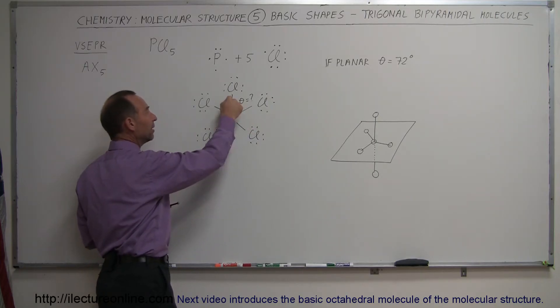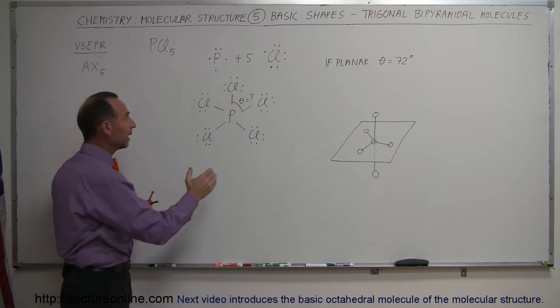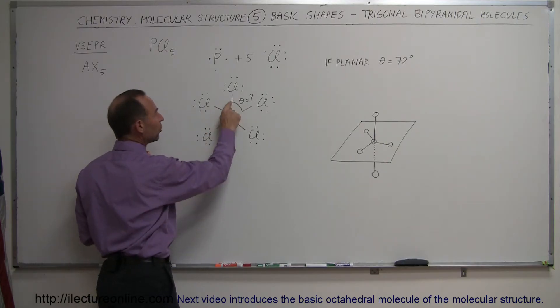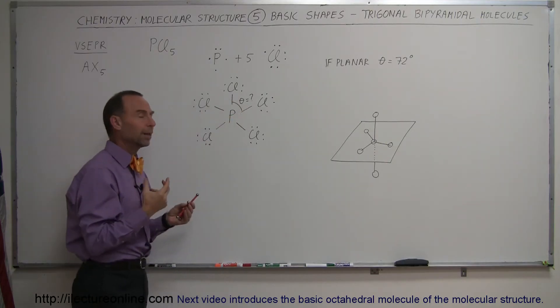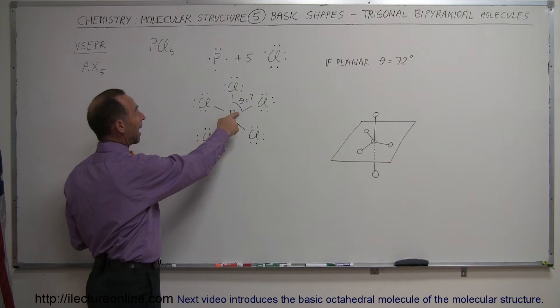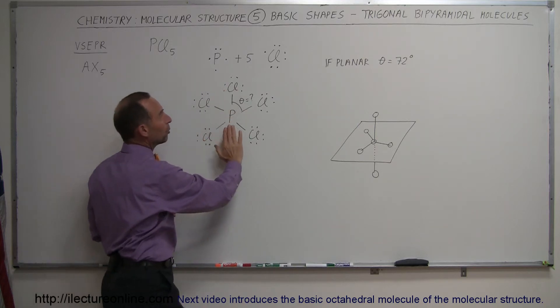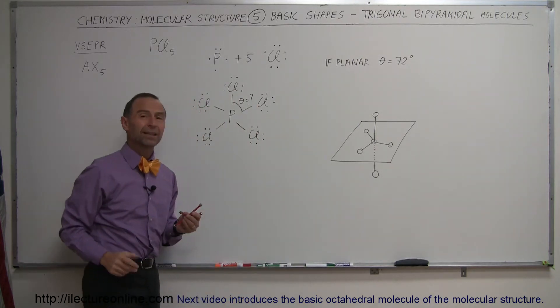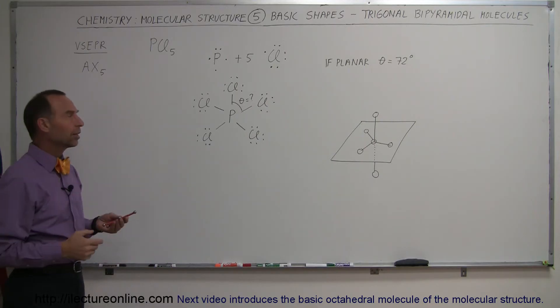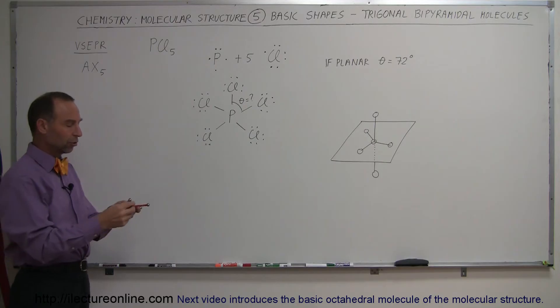Because remember these electrons that are bonding, they will repel each other, and they of course want the largest possible angle. The largest angle you could have when it's a planar molecule would be 72 degrees. That's not very much, so there's actually a different arrangement that these molecules can set up, in such a way that the angles between them is larger.